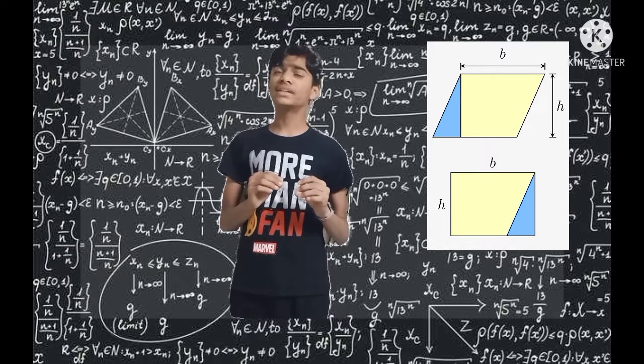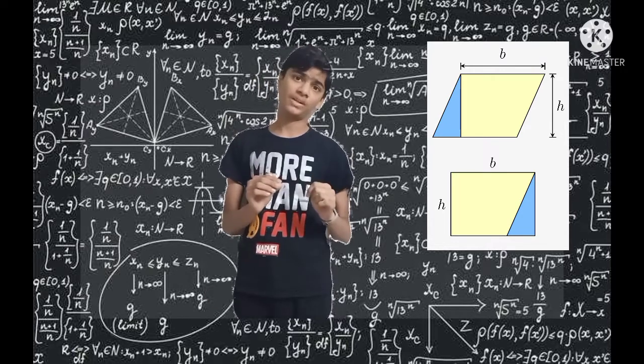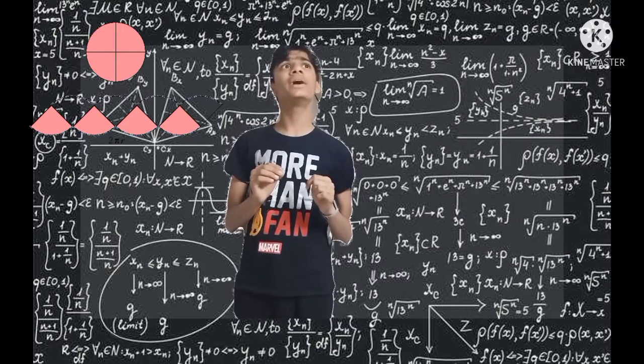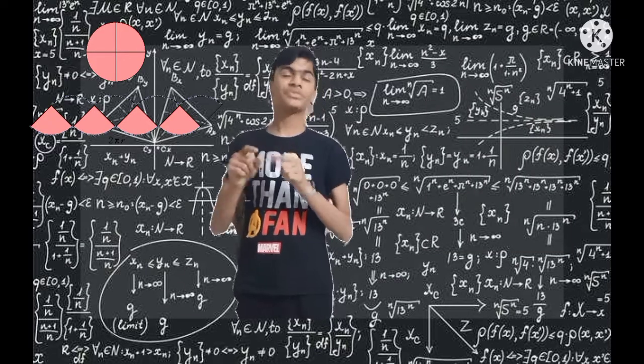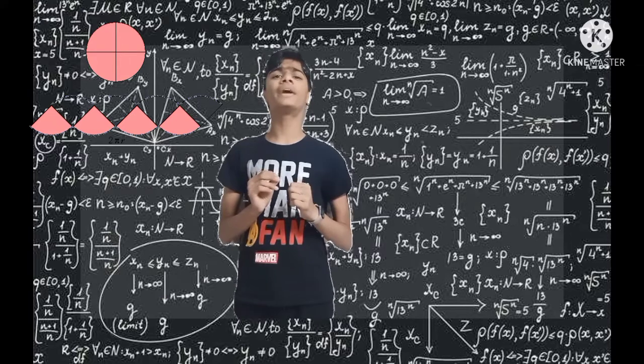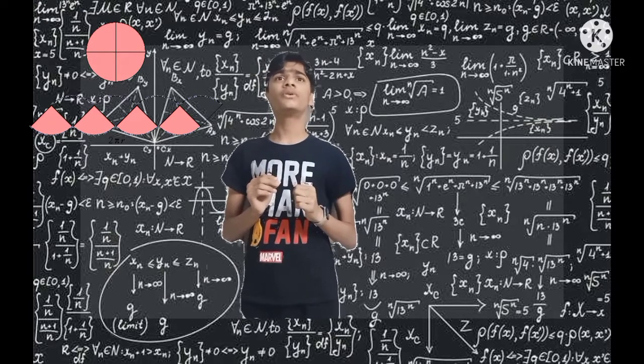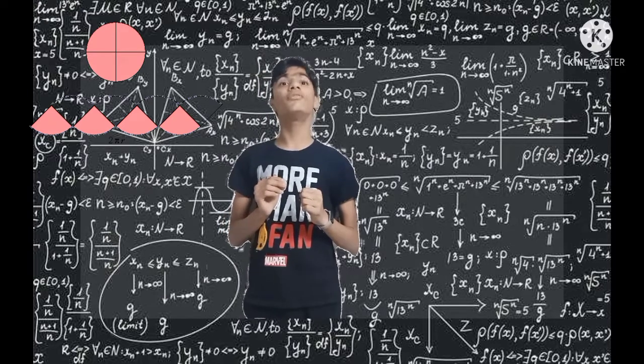Similarly, if we try this with a circle. First we will divide the circle into four pieces. Dividing it into four pieces will not form a perfect rectangle, but it will form a rectangle.